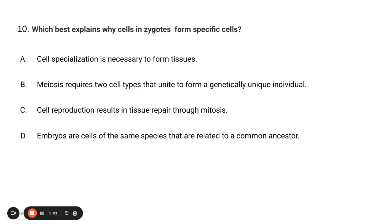Number 10. Which best explains why cells in zygotes form specific cells? The answer is A. Cell specialization is necessary to form tissues and I'll tell you why.